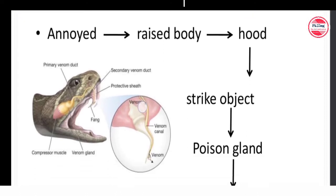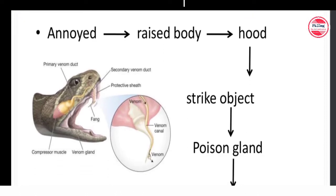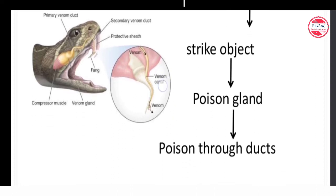King cobra is viviparous — it produces newborn babies rather than eggs. The biting mechanism involves the snake raising its body, spreading its hood, striking the object, and squeezing poison through the duct via the fangs.